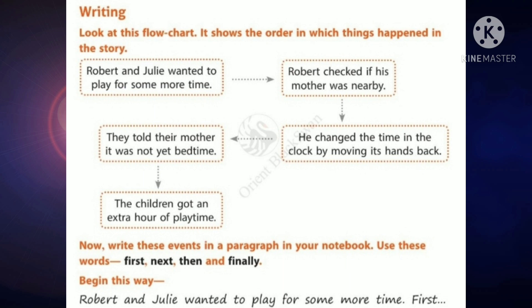Robert and Julie wanted to play for some more time. This is the first sentence you have to write. After that, add 'first': first, Robert checked if his mother was nearby. Then what happened? Next, he changed the time in the clock by moving its hands back. What happened then? Then, they told their mother it was not yet bedtime. And what happened finally? Finally, the children got an extra hour of playtime.